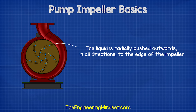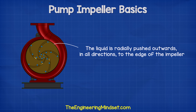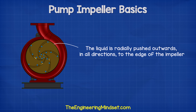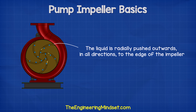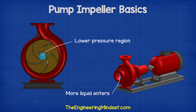The impeller is submerged in water. When the impeller rotates, the water within the impeller also rotates. As the water rotates, the liquid is radially pushed out in all directions to the edge of the impeller and into the volute. As the water moves outwards off the impeller, it creates a region of low pressure which pulls more water in through the suction inlet.